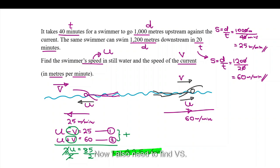Now, I also need to find V. So, all I need to do is substitute in 1. So, U minus V is 25. I know U is 42.5 minus V is 25. Obviously, move the V to the other side. Move the 25 to this side. So, you get 42.5 take away 25 is equal to V. So, I can see here clearly V is equal to 17.5.